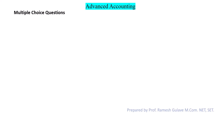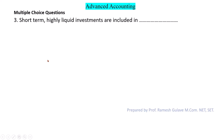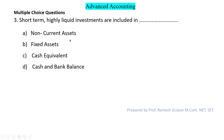Next question: Short-term highly liquid investments are included in what? This question is based on AS3. The options are non-current assets, fixed assets, cash equivalents, and cash and bank balance. Highly liquid investments which are held for the short term are included in cash equivalents. So option C is the right answer.